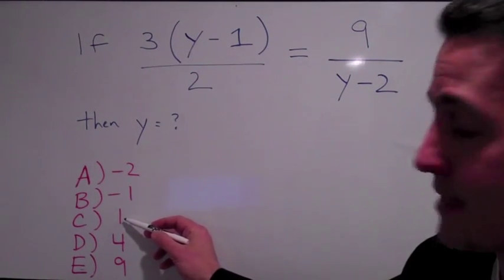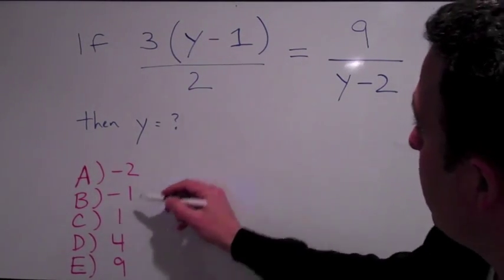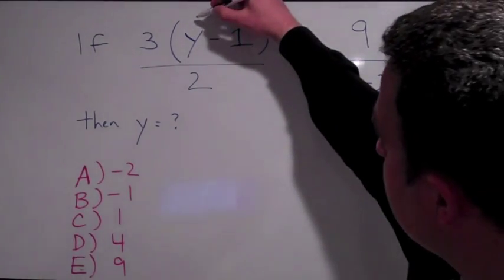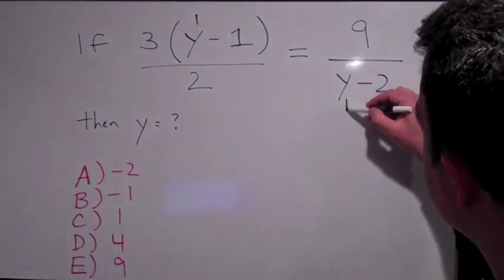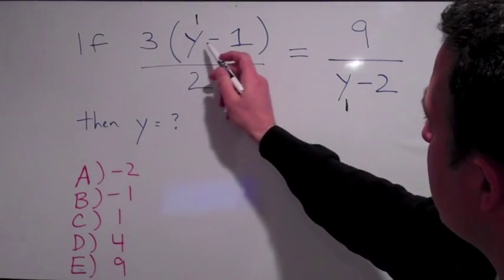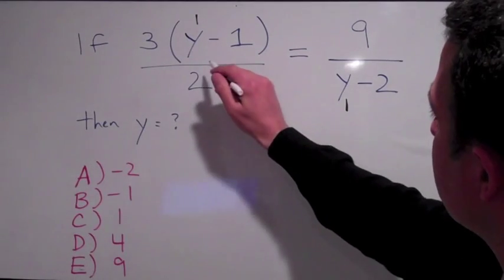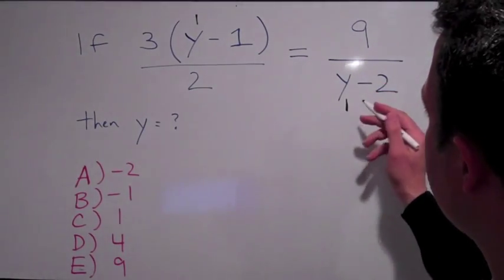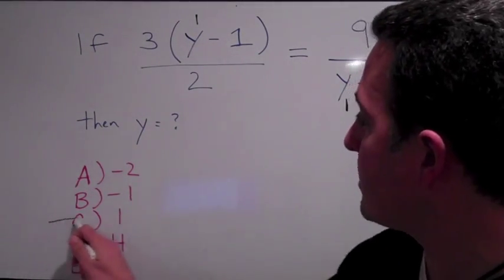We're going to plug in 1 into the answer choices. So instead of y, we're going to put 1 to both sides and ask yourself, does 3 times 1 minus 1, 3 times 0, does 0 equal 9 over negative 1? No, it does not. So you cross out C.